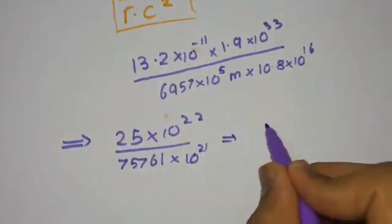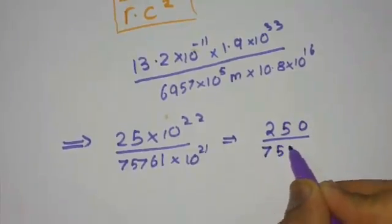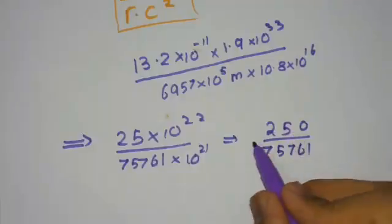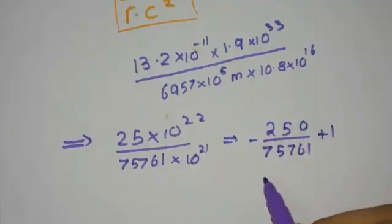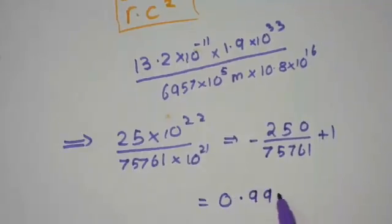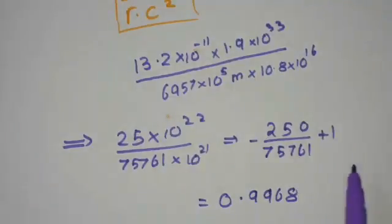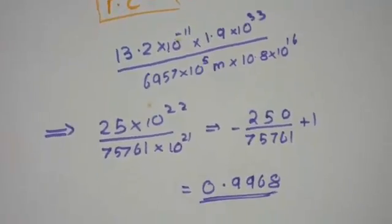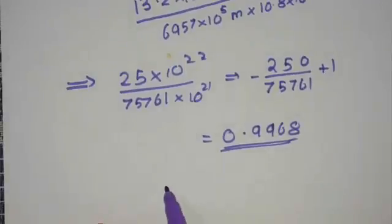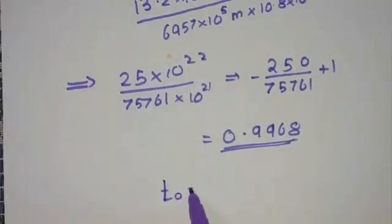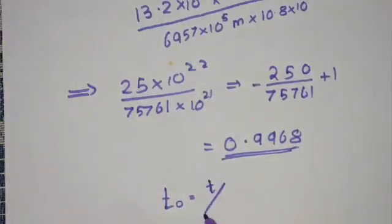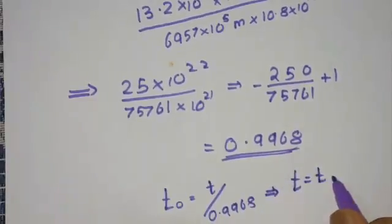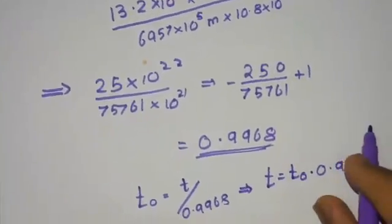Working out the numbers, we get something like 25 times 10 to the 22 divided by 75761 times 10 to the 21. This yields a value of 250 divided by 75761, which is approximately 0.0142. So 1 minus this gives us 0.9968. We can therefore say t equals t-naught times 0.9968.